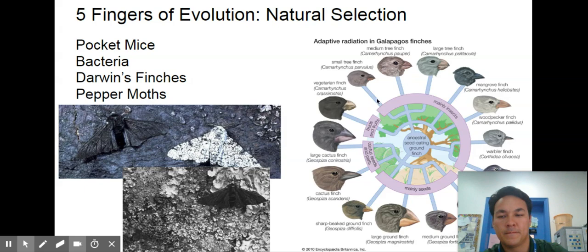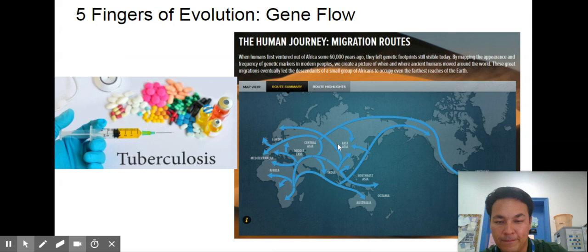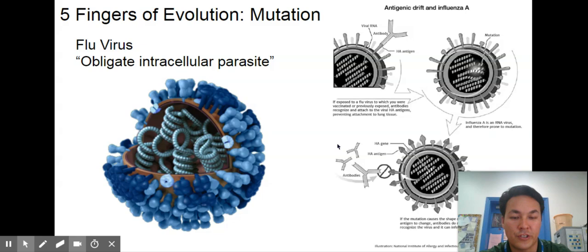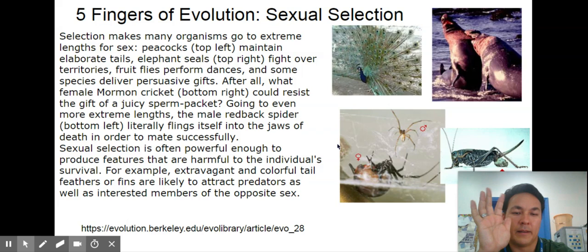So we'll see some examples of them in action. All right here is gene flow this is an example of humans migrating so they would be going around. Mutation the flu virus why we need a new flu shot every year so it's constantly mutating.